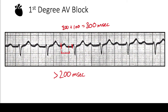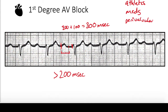First degree AV block can occur in athletes due to slow conduction, and also in patients taking medications such as digoxin and amiodarone. Clinically, if a patient is admitted for infection or sepsis, a new first degree AV block could be the first sign of a perivalvular abscess in someone with endocarditis — an important finding to watch for on boards and in clinical practice.